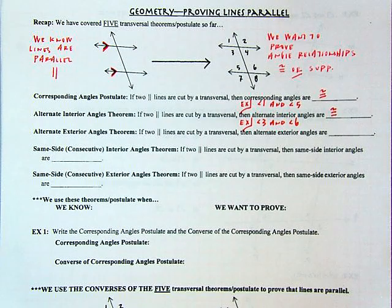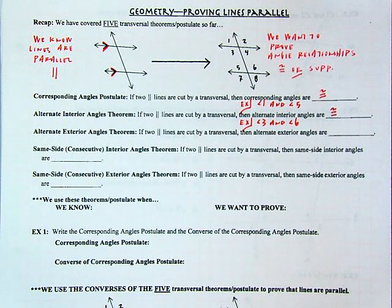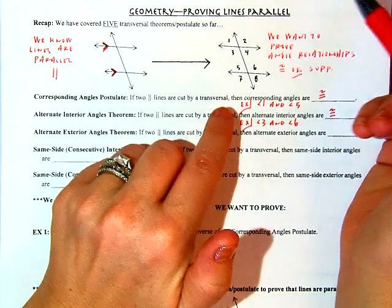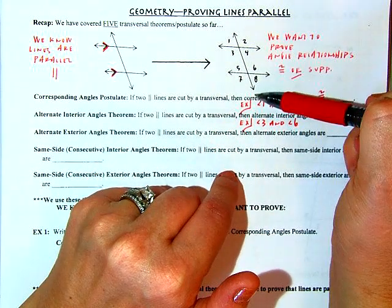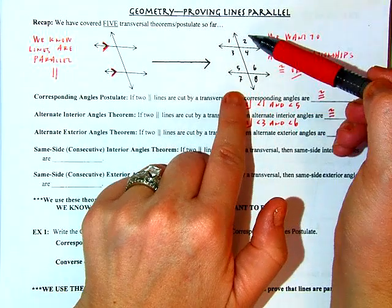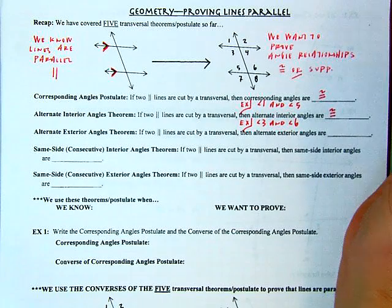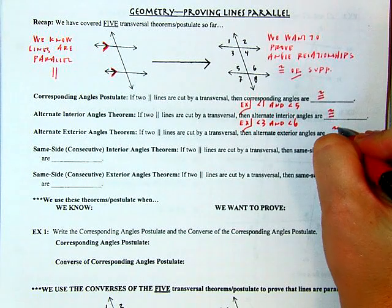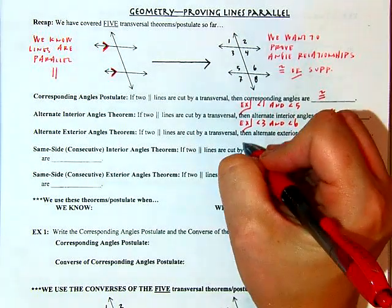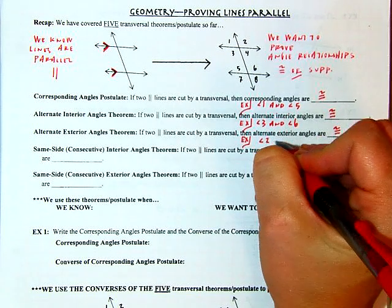Alternate exterior angles: if we start with the parallels cut by the transversal, we know that alternate exterior angles are also congruent. Alternate means opposite sides of the transversal, and exterior means outside of the parallels. So two and seven, one and eight would be the alternate exterior angles — the relationship is one of congruence. One more example here would be two and seven.